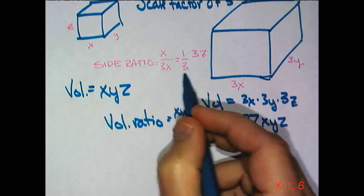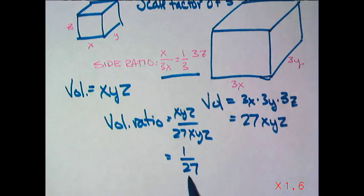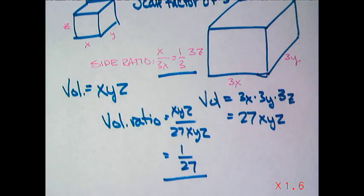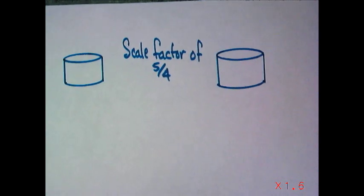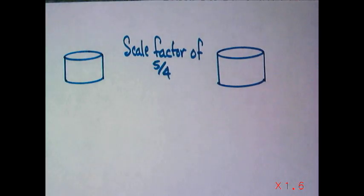Hold on. If you think, so the side ratio is 1 to 3, the volume ratio is 1 to 27. Well, let's make it a little bit more challenging. I have two cylinders with a scale factor of 5 fourths.